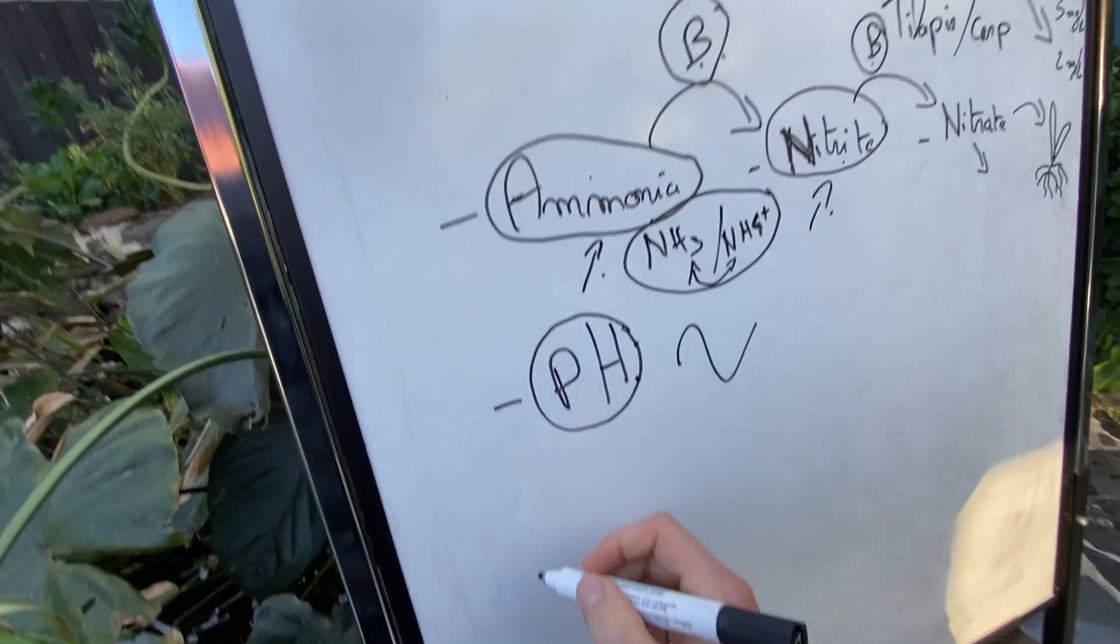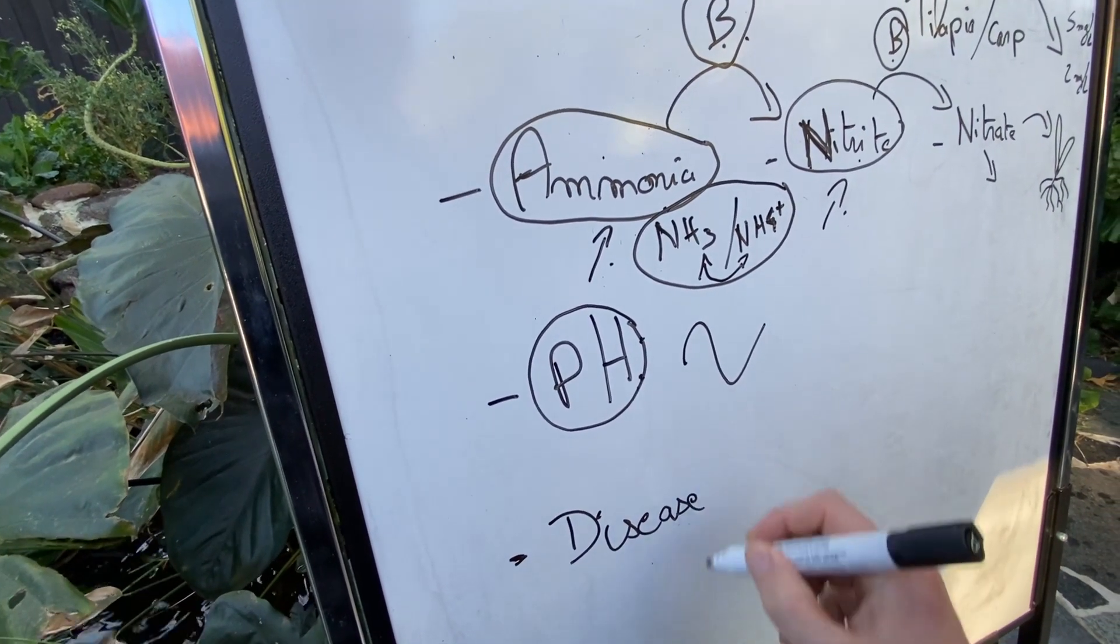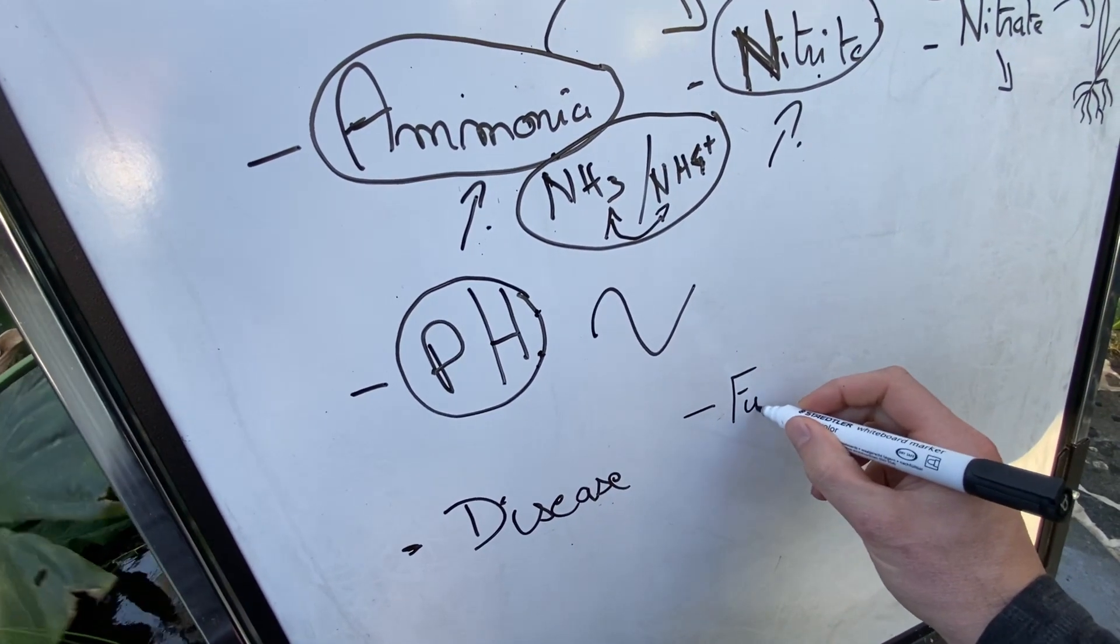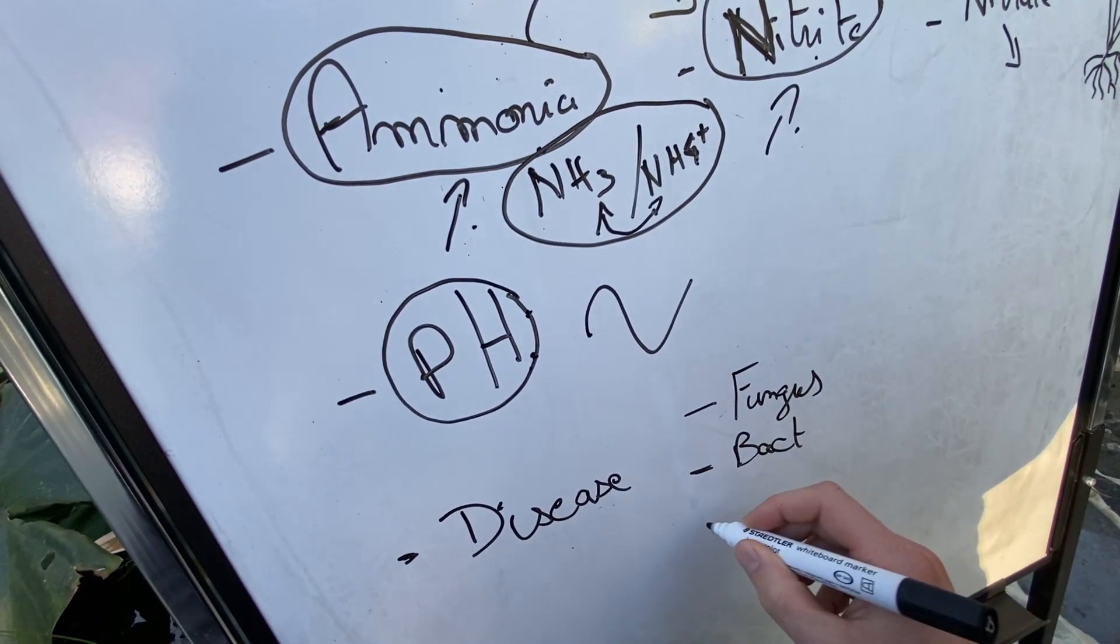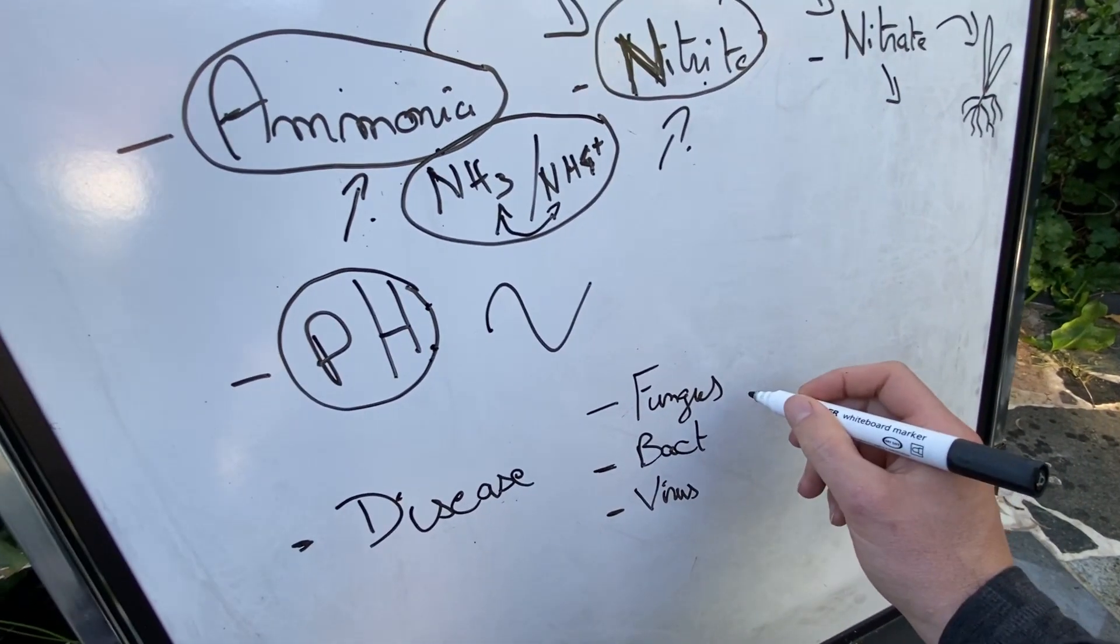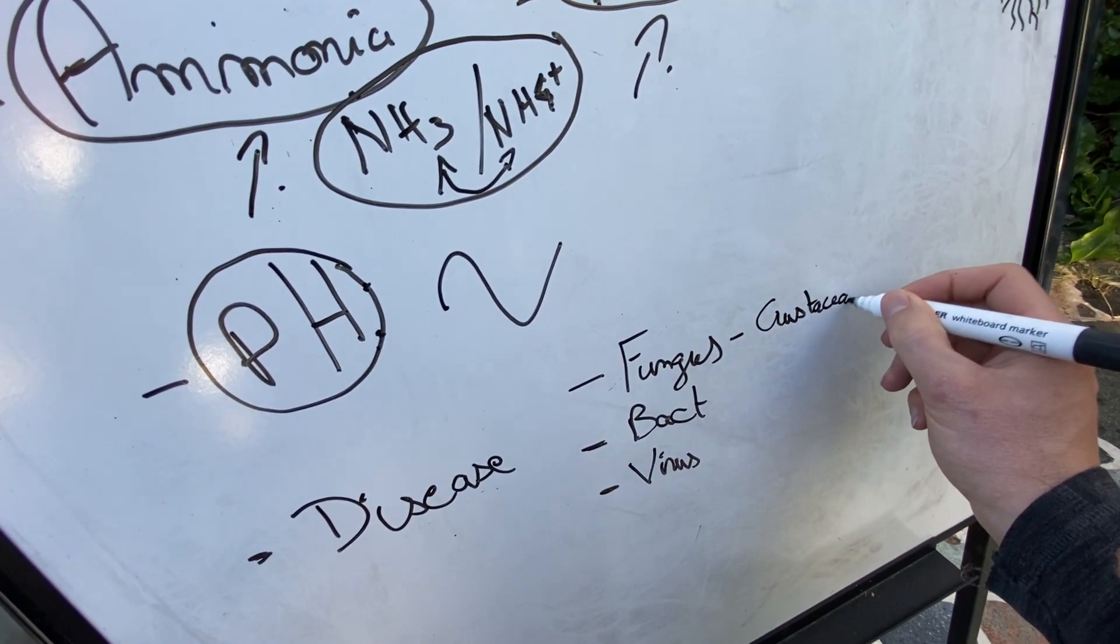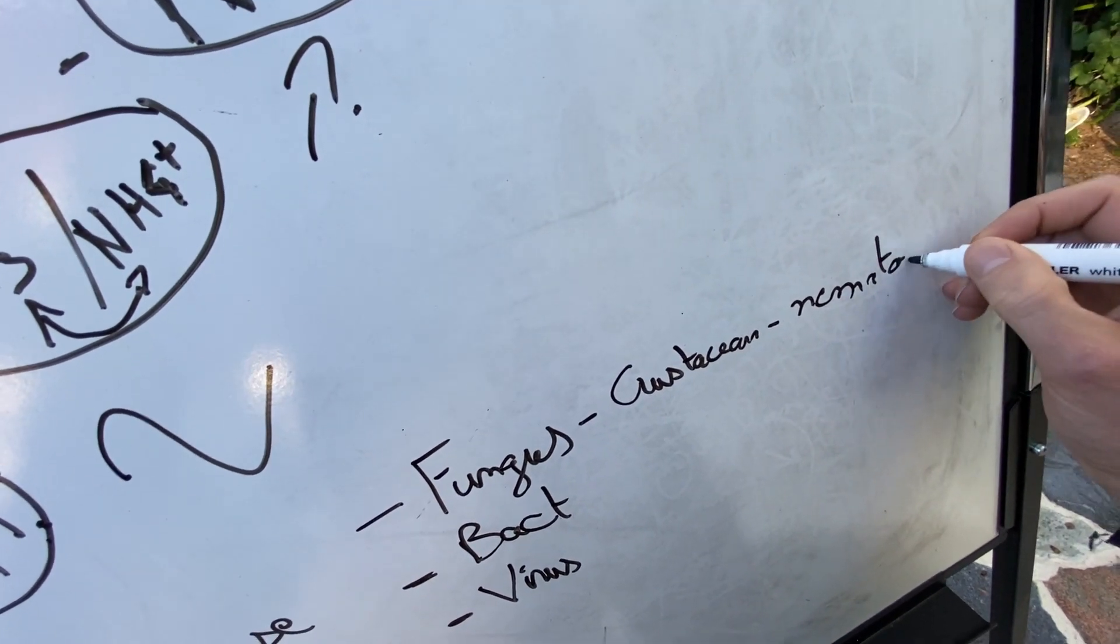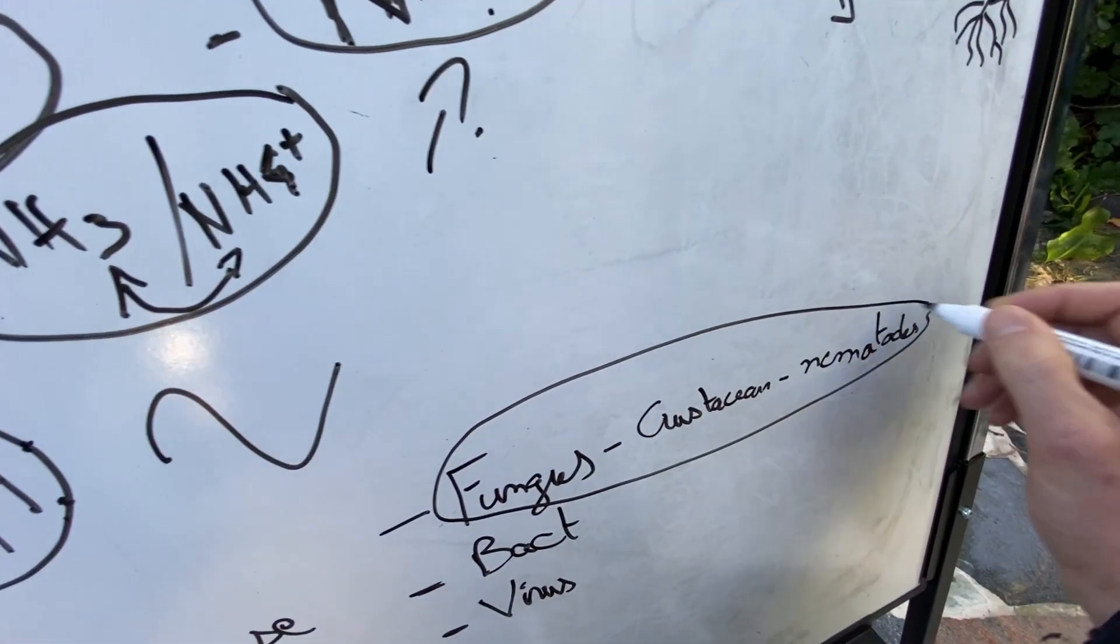Now, another one that is important as well is called the disease. Disease, you got different types of disease. Let's list three of them. You got the fungus, bacteria, you got the virus. But actually, when I say fungus, it's part of another category. Fungus, some crustacean, nematodes. When I say nematodes, I'm talking about type of worms. Mollusks, etc. And all this, as you understand, is parasites.